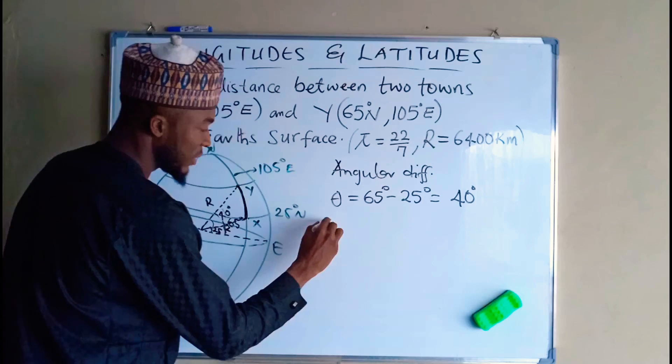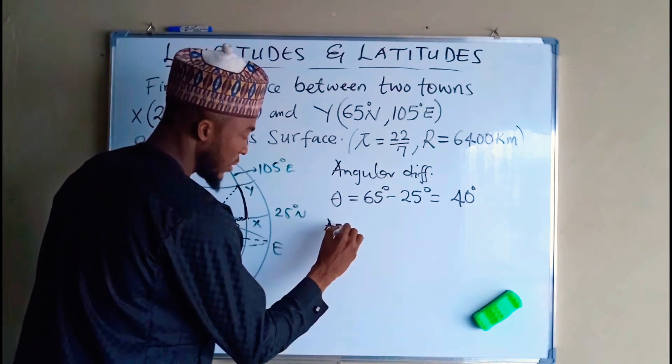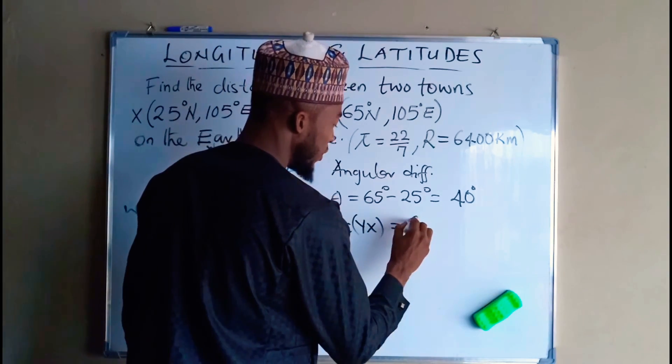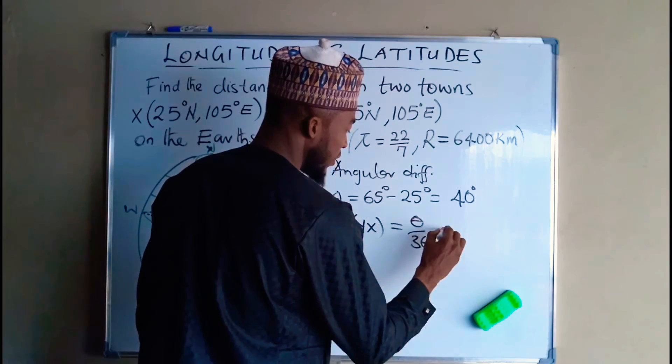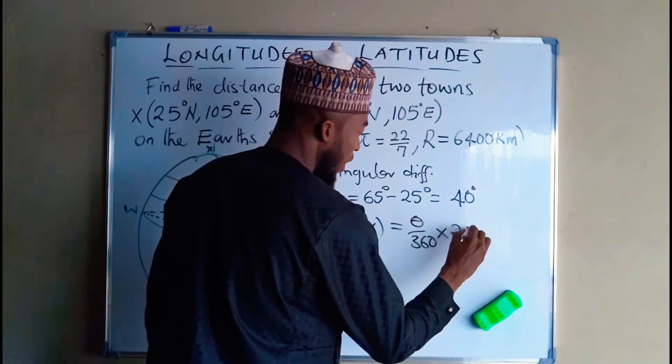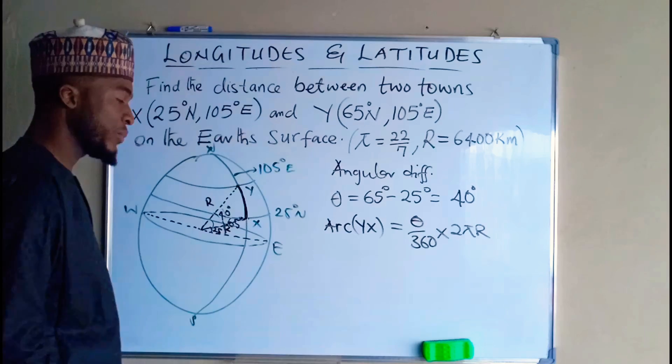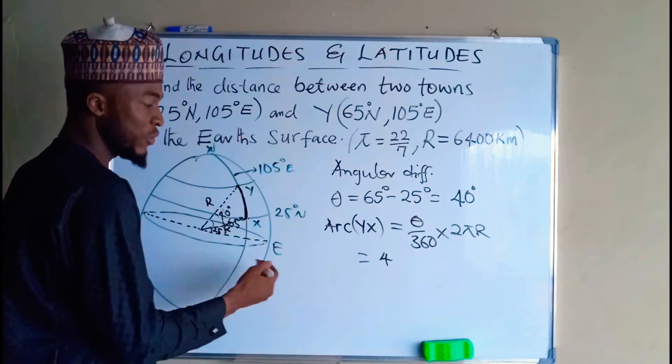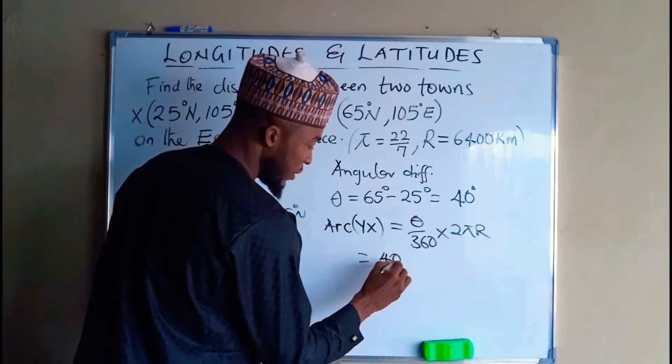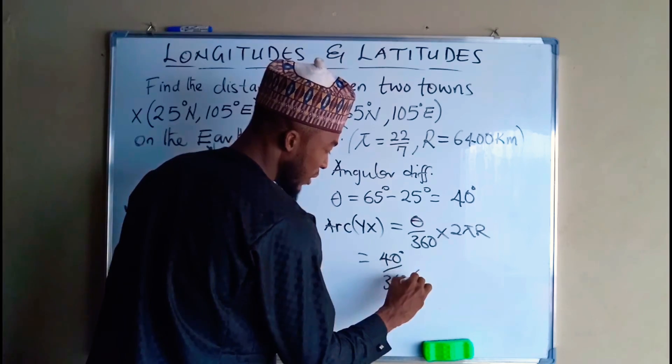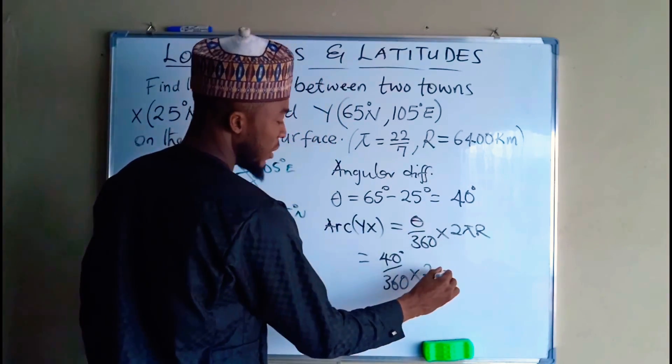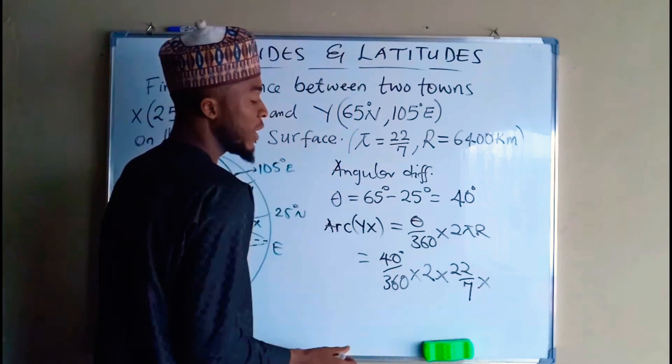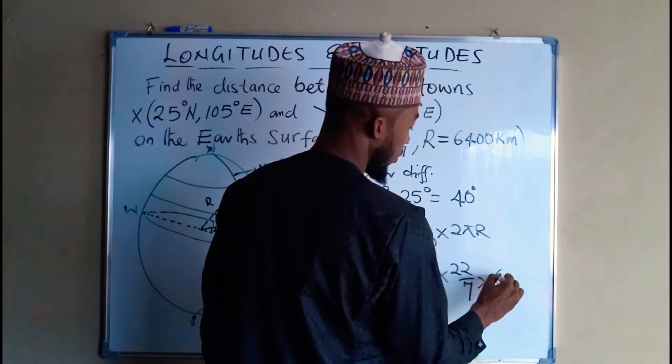Therefore the arc length, arc YX is going to be equal to theta divided by 360, multiplied by 2 pi capital R. This time around, by substitution, we have 40 degrees, which is the angle subtended by the two towns, divided by 360, times 2 times pi, which is given as 22 over 7, multiplied by capital R, which is also constant, 6400 km.